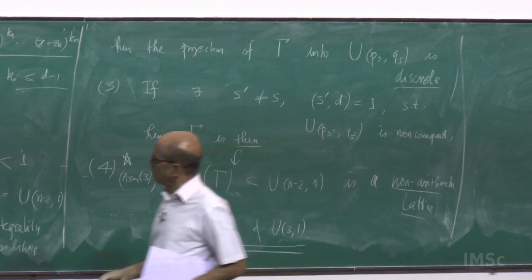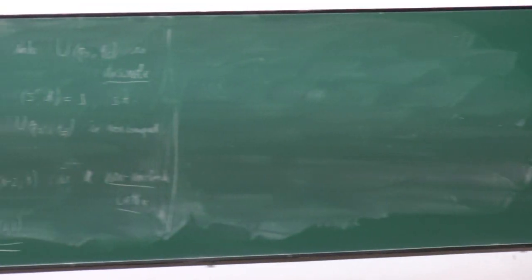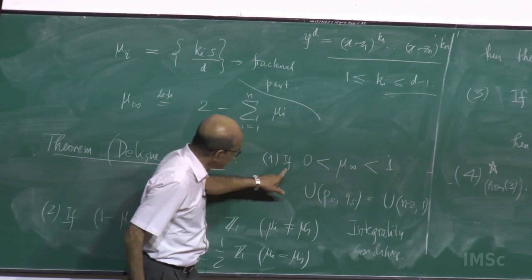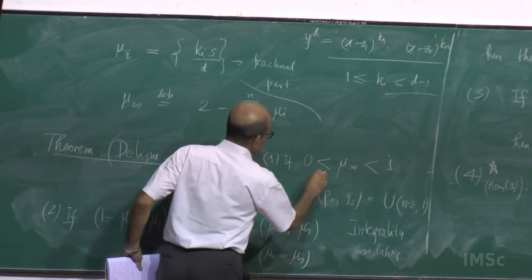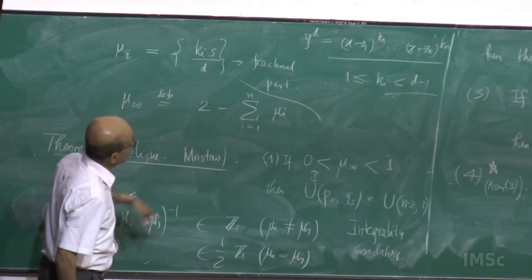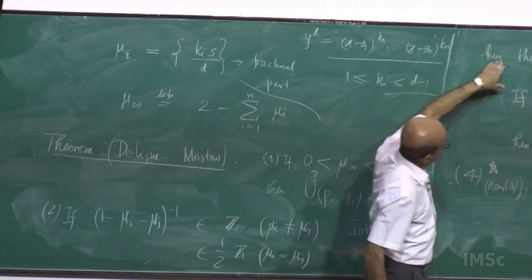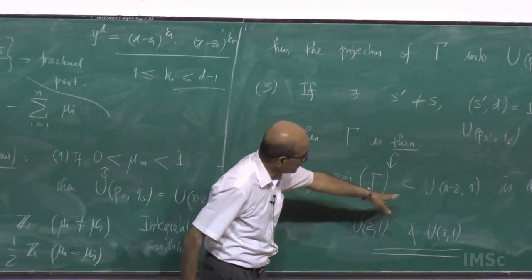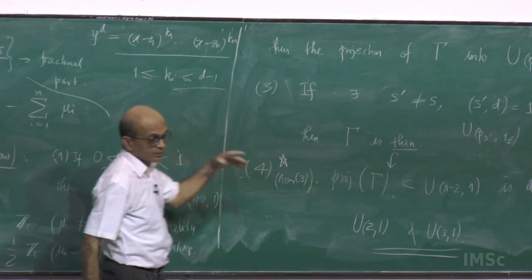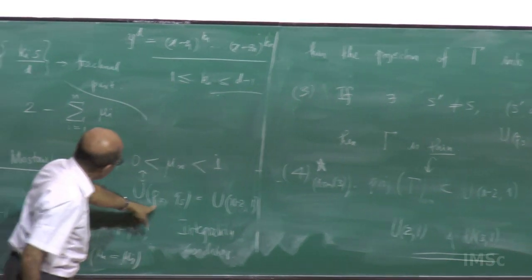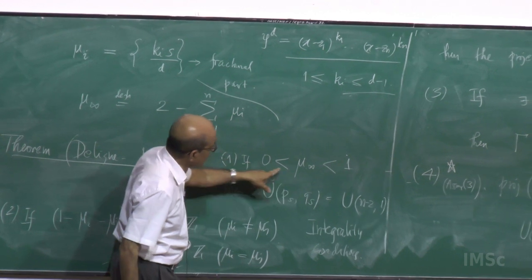In order that we should get a rank-1 factor, this is necessary — in fact it is an if-and-only-if condition. This is not hard to prove — it is something simple. The real thing is the discreteness of projections and, what is more, that the projection has finite co-volume — it is a lattice. That is the important part.